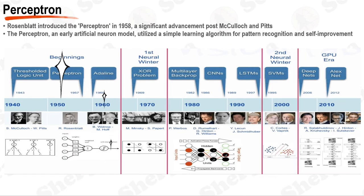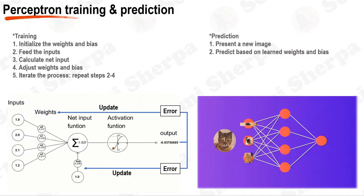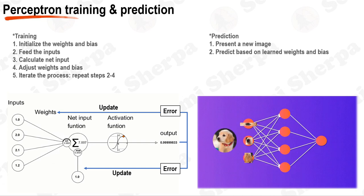After the pioneering work of McCulloch and Pitts, the next significant milestone was the introduction of the Perceptron by Frank Rosenblatt in 1958. Frank Rosenblatt's Perceptron was an early model of an artificial neuron that utilized a simple learning algorithm to recognize patterns. It was a single-layer neural network that could classify linearly separable patterns through supervised learning. The Perceptron adjusted its weights based on the errors it made during the learning process, enabling it to adapt and improve its performance. The aim of a Perceptron is to classify input data according to learned weights and biases.